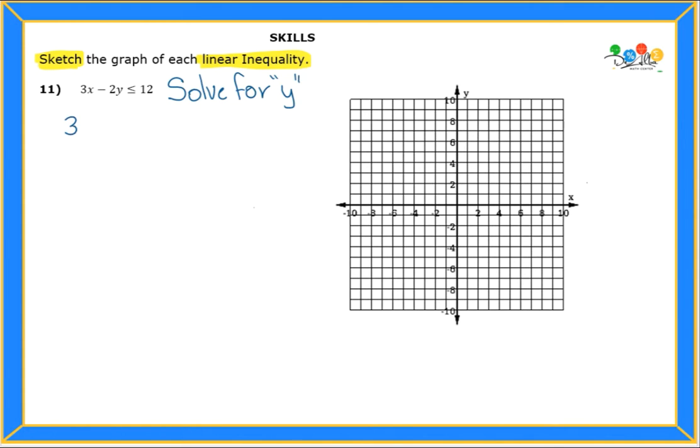Okay, let's write down my problem. So I have 3x minus 2y less than or equals to 12. So I am going to continue with the steps to solve for y. I need to subtract 3x on both sides.